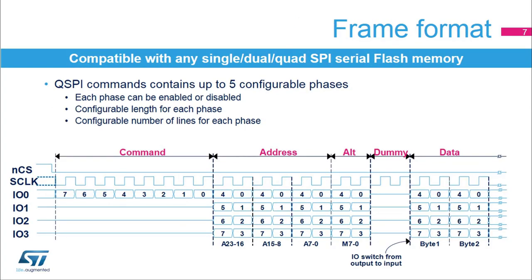The Quad SPI memory interface offers high flexibility in frame format configuration. This flexibility allows addressing of any serial flash memory. Users can enable or disable each of the five phases and configure the length of each phase as well as the number of lines used for each phase.